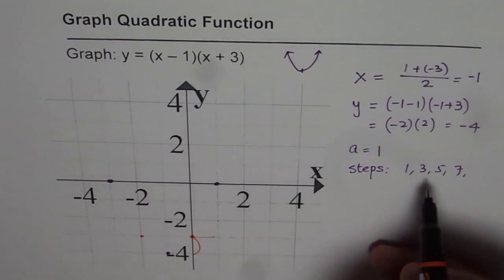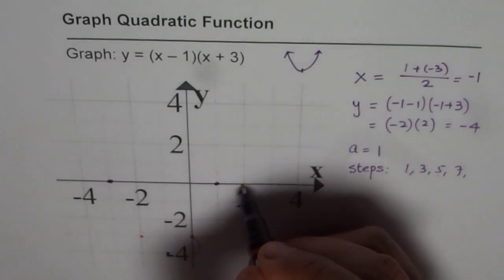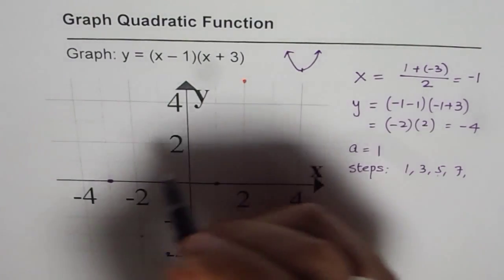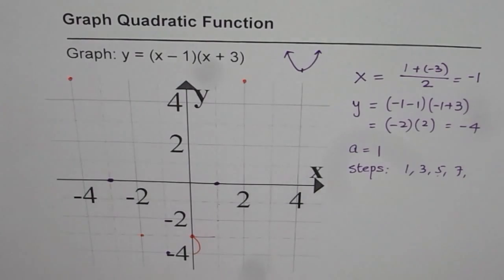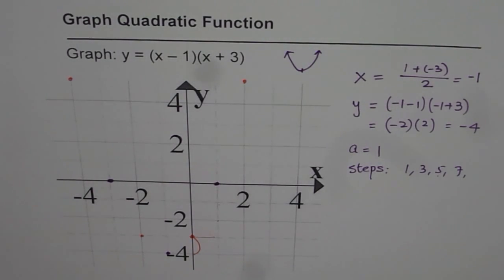And beyond this, 1, 3, 5 is the next step. So the next step will be there for us. So that is how we can get our parabola from the given equation, right?